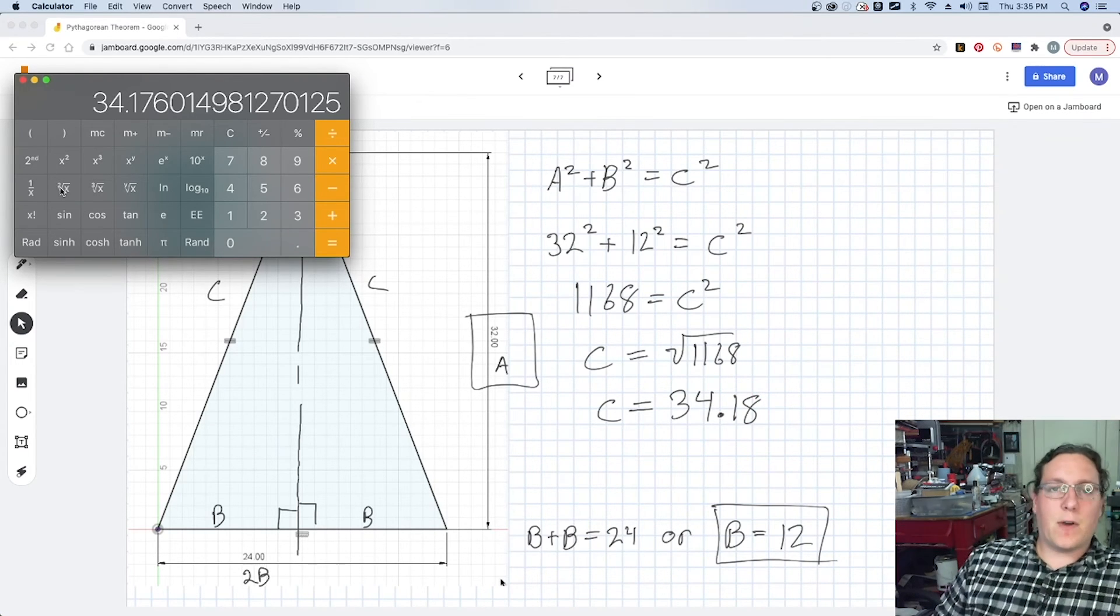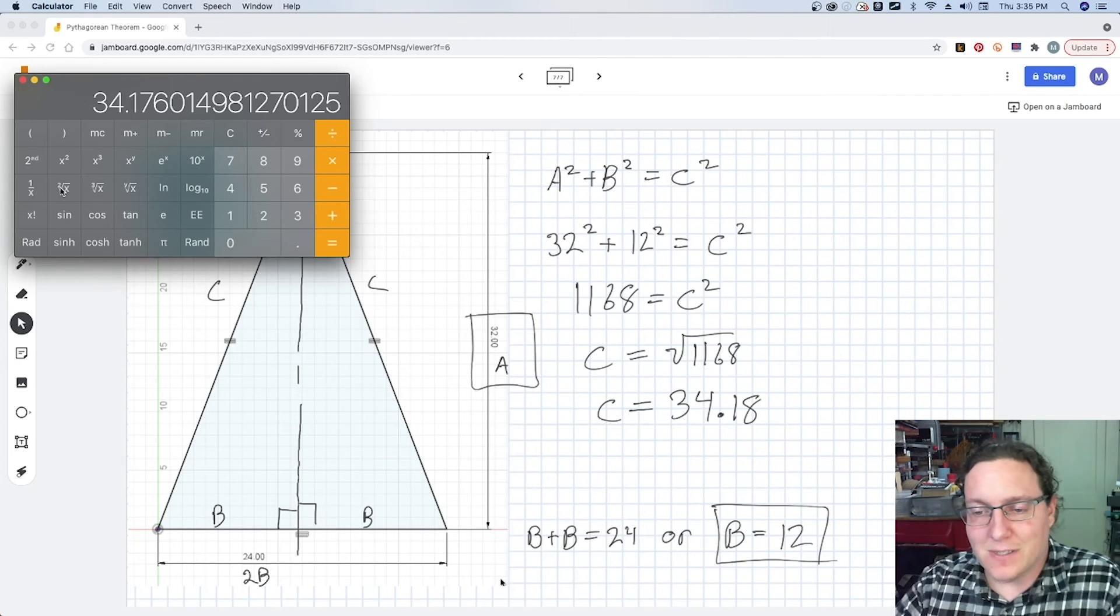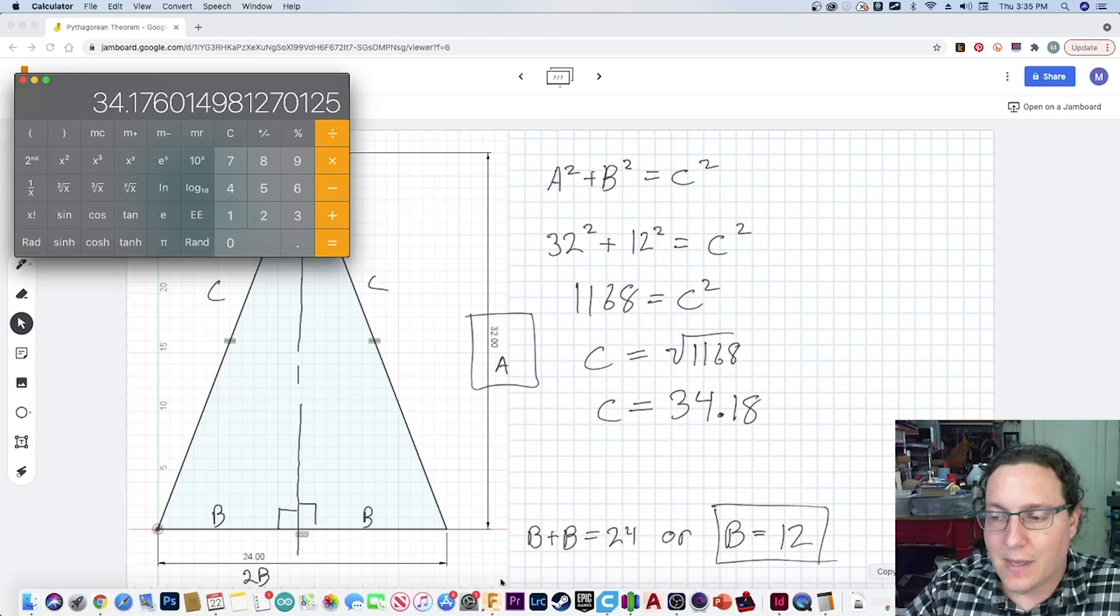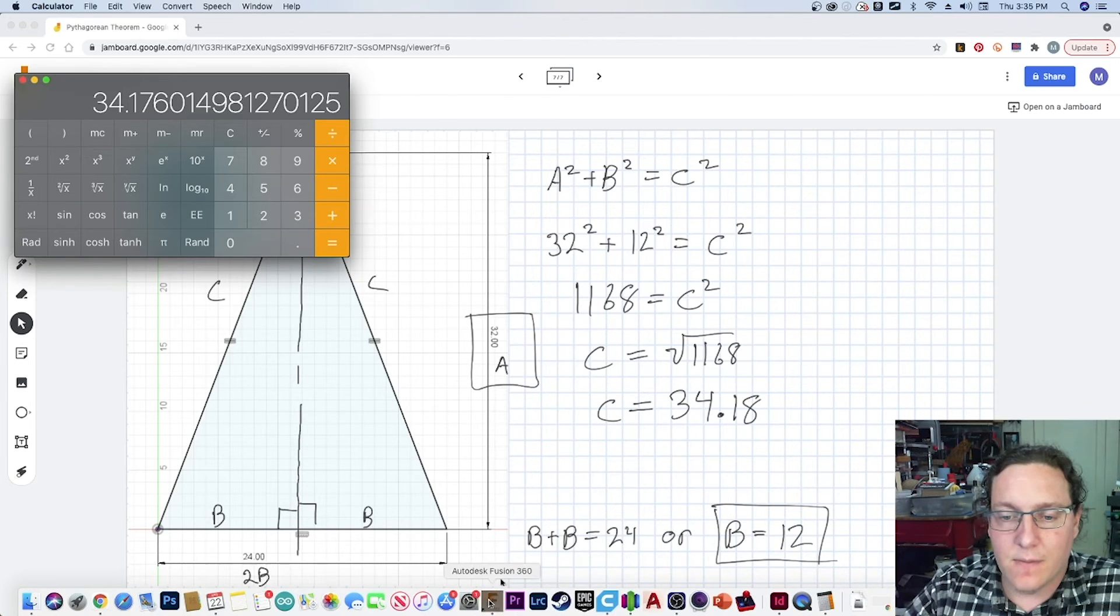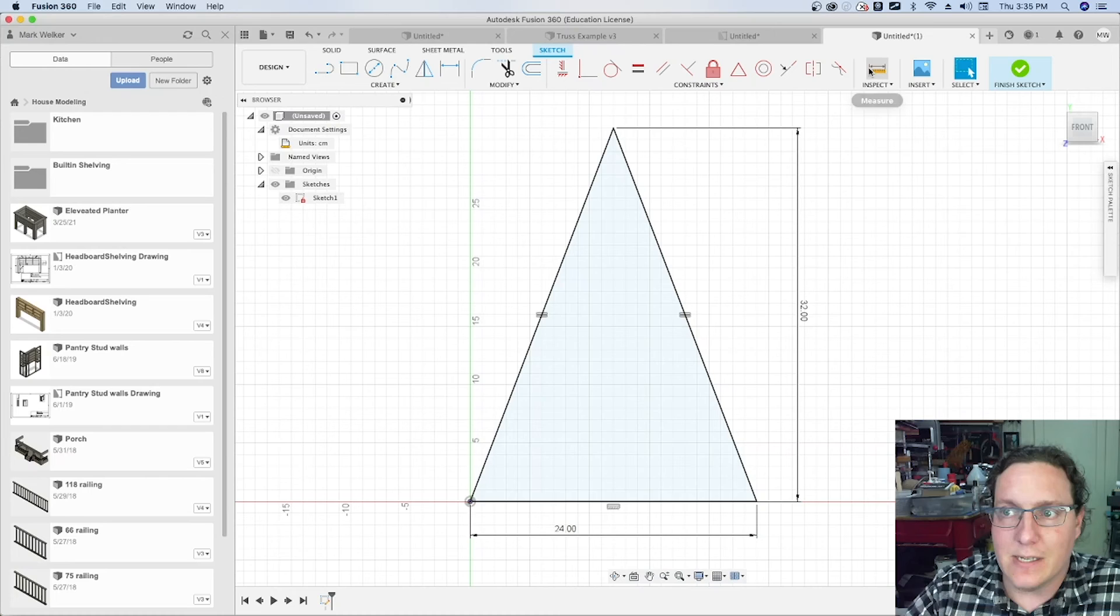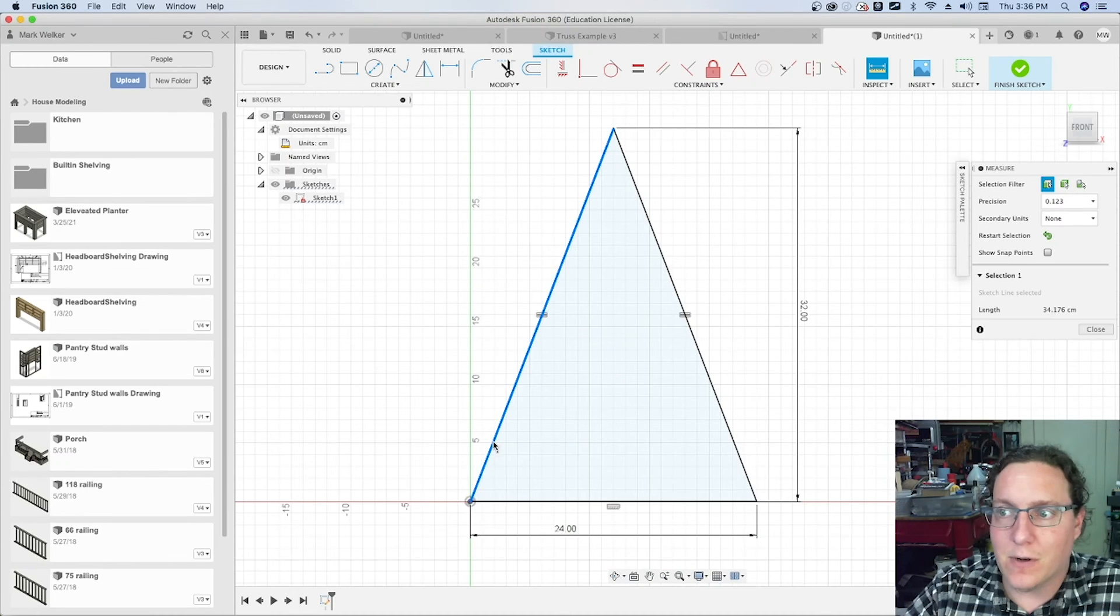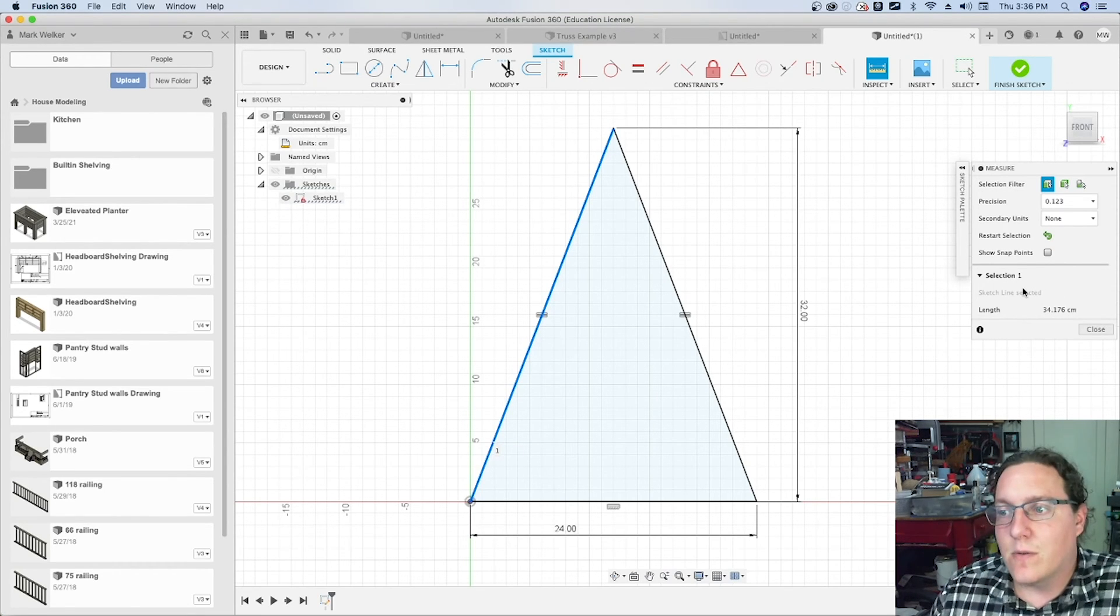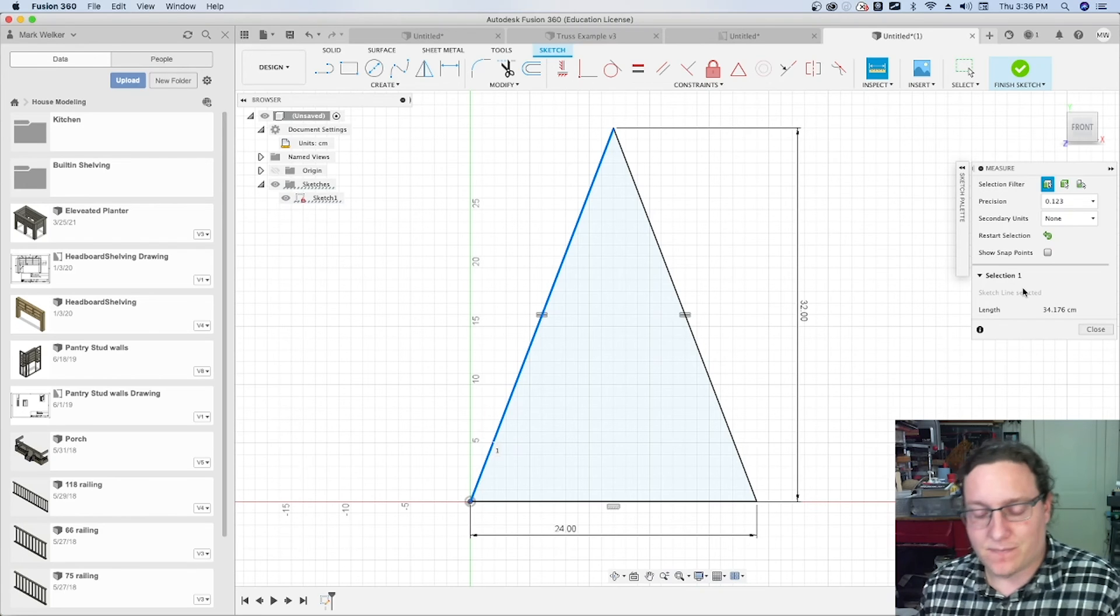Now, nice thing about computer models is since we actually created that in some CAD software, we can pull up the CAD software itself and inspect. We can tell it that I want to know the length of that line. You may notice that we actually have the same value, that 34.176.